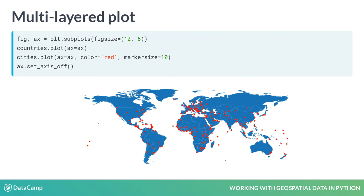With this keyword, we can pass an existing plot on which to add the additional layer. It takes a matplotlib axis object, which is returned by the plot method, or, as done here, can be created with the subplots function of matplotlib. In this example, we create a figure with one subplot, and then plot the countries and the city locations on that subplot, each time specifying the ax keyword.